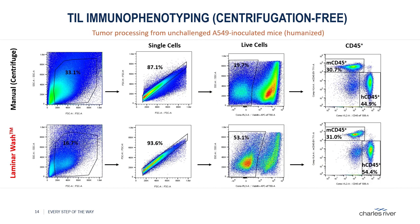The viability and immunostaining procedure on the dissociated tumor cells from CT26 mice revealed that the laminar wash system not only improved staining results, but also simplified the workflow and saved processing time required for flow cytometric analysis. We also observed a similar trend in overall improvement of data quality and time savings on tumor-bearing humanized mice, demonstrating that these benefits offered by the laminar wash could be applied to a wider range of animal tumor models.